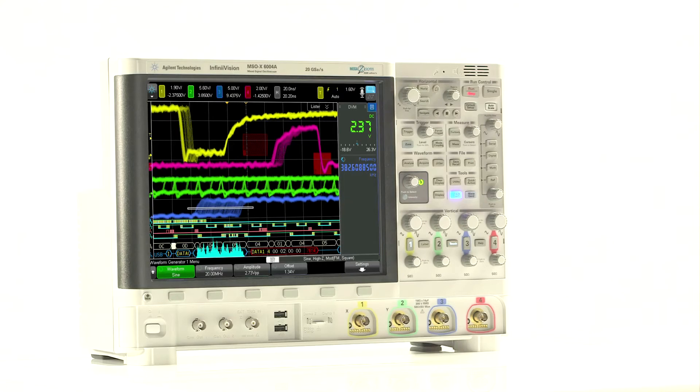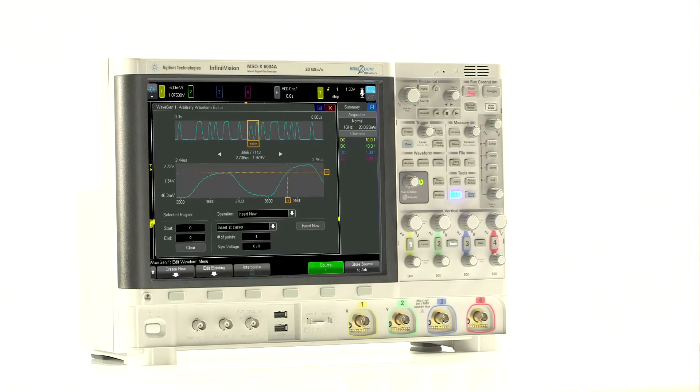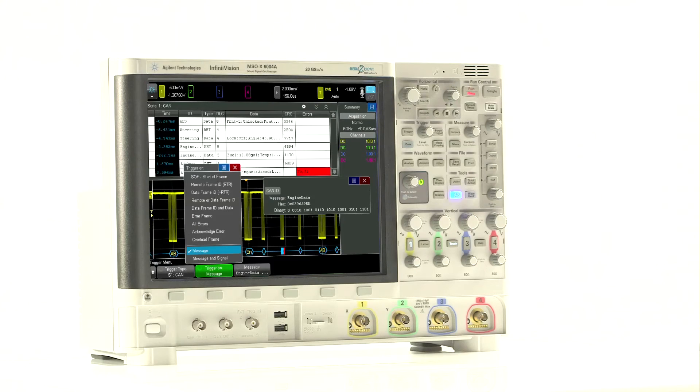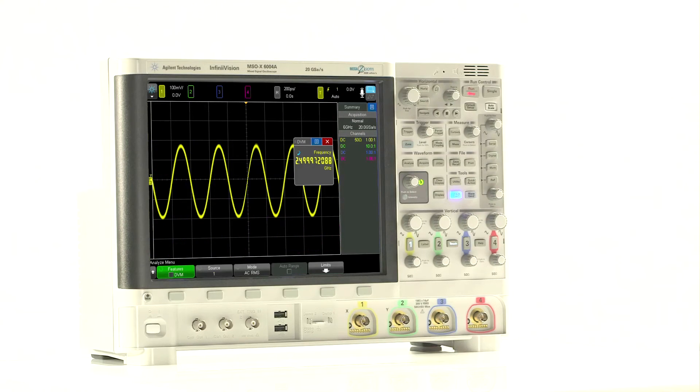A 6 gigahertz oscilloscope, of course, as a mixed signal oscilloscope, it adds 16 digital channels. Plus, it's a dual-channel arbitrary waveform generator, a serial protocol analyzer, a three-number digital voltmeter, and a 10-digit counter and totalizer.